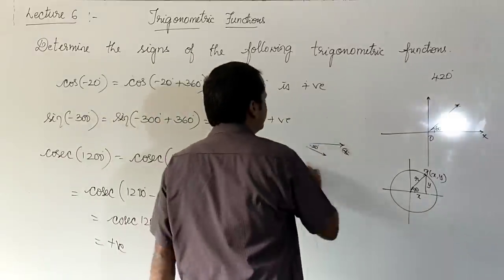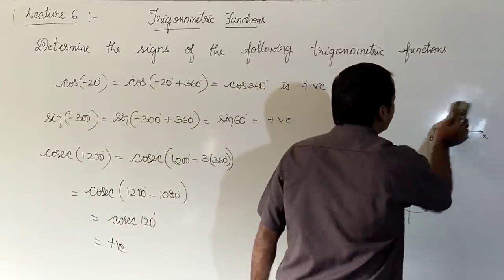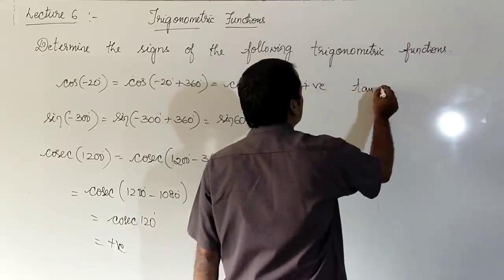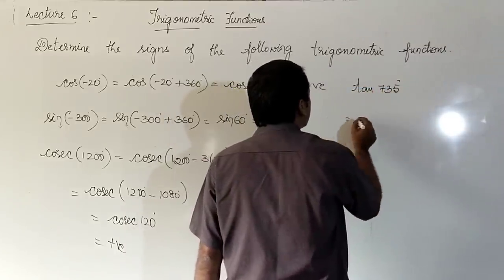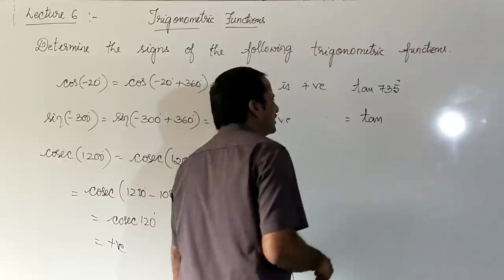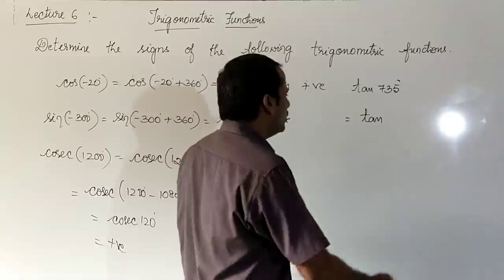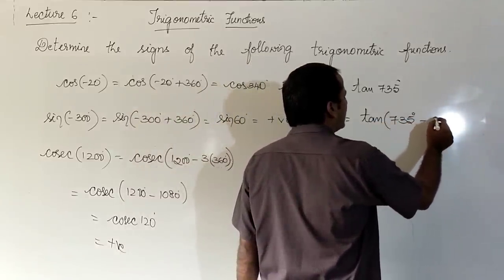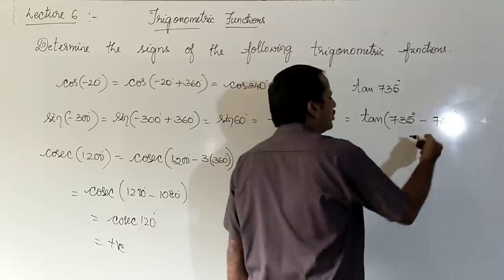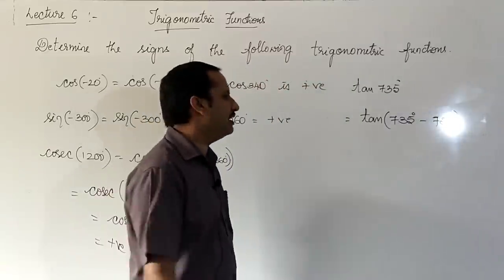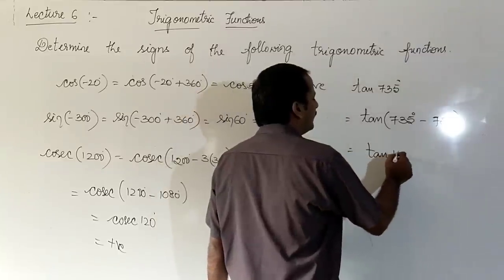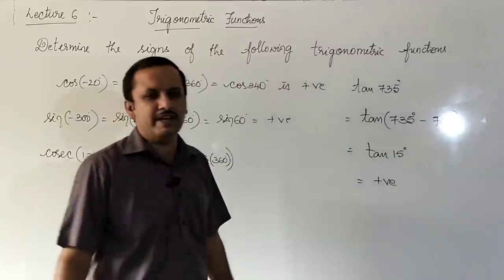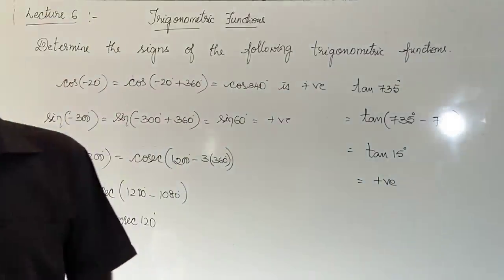Next: tan 735 degrees. 735 degrees is greater than 360 degrees. Subtract 2 × 360 = 720: tan(735 − 720) = tan 15 degrees. 15 degrees is in the first quadrant, so the answer is positive.